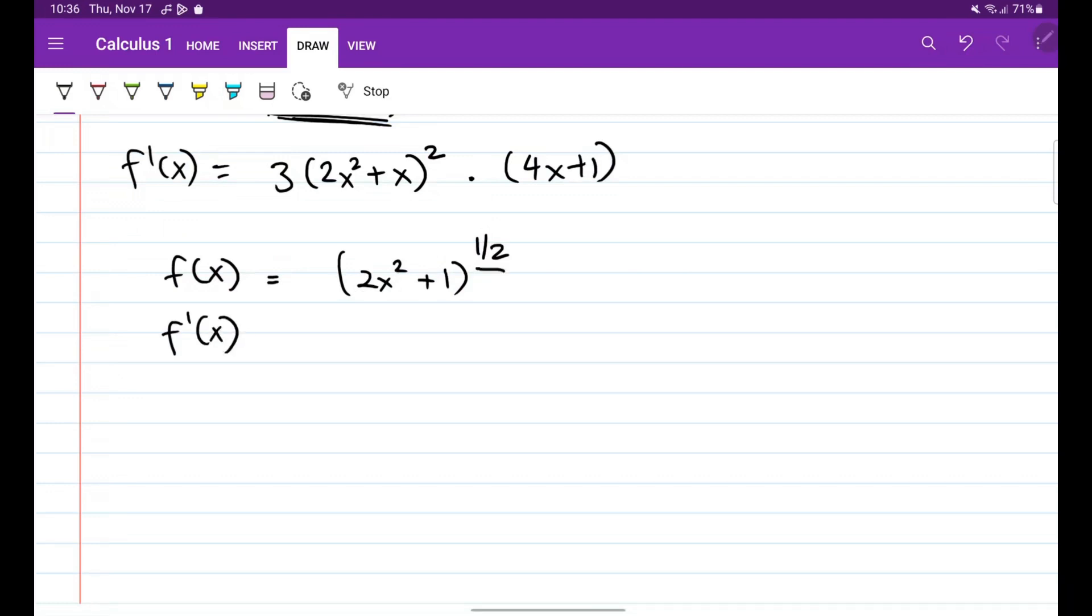So baba natin, so 1 half times 2x squared plus 1, then minus 1 sa exponent, minus 1 half. Okay, times derivative nung loob which is just 4x. Okay, so ganun lang naman yung pagkuhan ng derivative using chain rule.